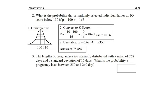Okay, so let's go ahead and look at problem three. The length of pregnancies are normally distributed with a mean of 268 days and a standard deviation of 15 days. What is the probability that a pregnancy...